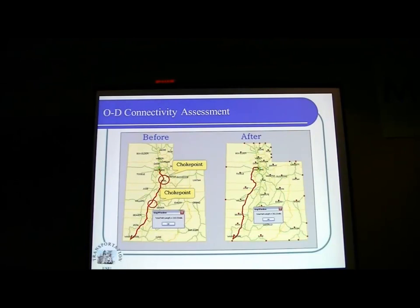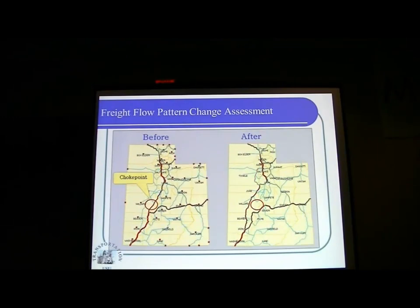If you think about the shipment, we need to arrive there on time. But with this detour and reroute, we may delay the shipment. So it's not only about connectivity — we need to use the travel trip table that we developed to assign that to the transportation network.